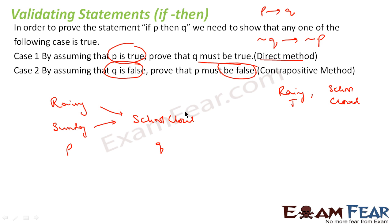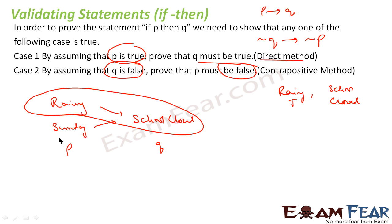So to summarize validating IF-THEN statements: first approach is the direct method — if p is true, then q must be true. The contrapositive method — if q is not true, then p is also not true. Note that this is a single-directional flow: if it is raining, school is closed; if school is not closed, then it is not raining.